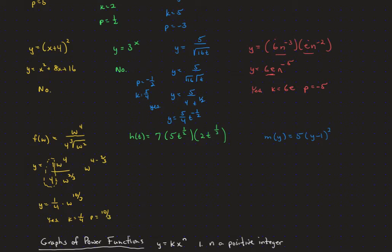The next one, h of t — these are all being multiplied, so we can gather together: 5 times 2 is 10, times 7 is 70. We're going to add the exponents, so we have to add one-half and one-third. With common denominators, that's 3 sixths plus 2 sixths, giving us t to the 5 sixths power. So it is in the form of a power function, k times t to the p, with k equal to 70 and p equal to 5 sixths.